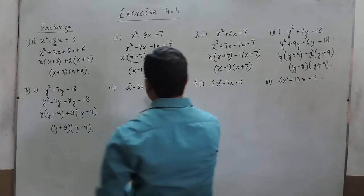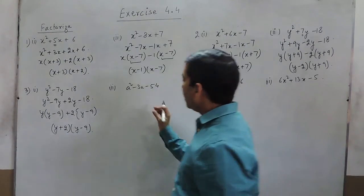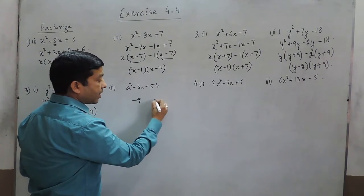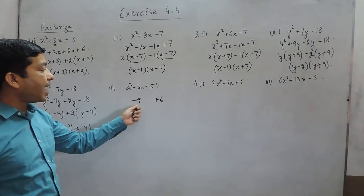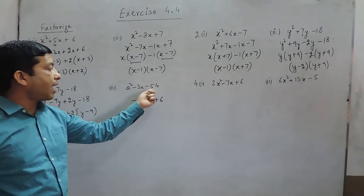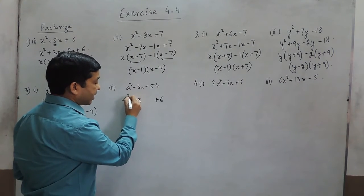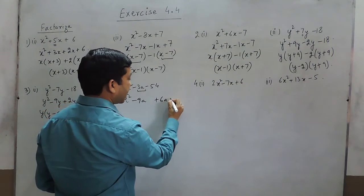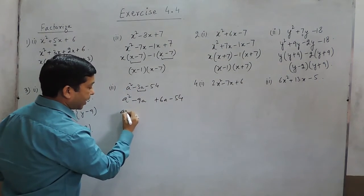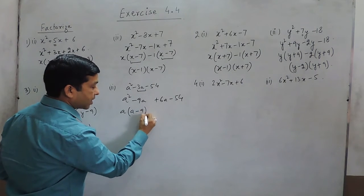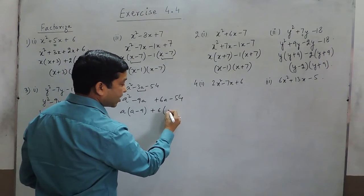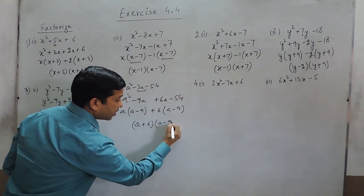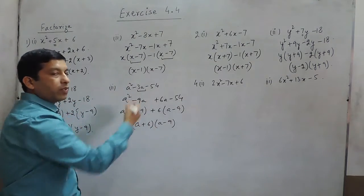In the next question, we divide 54 into two factors where the sum is minus 3. The factors are minus 9 and plus 6: adding them gives minus 3 and the multiplication is minus 54. So we write a squared minus 9a plus 6a minus 54. Taking a common in the first two terms gives a minus 9, and taking 6 common in the last two terms also gives a minus 9. So the two factors are a plus 6 and a minus 9.